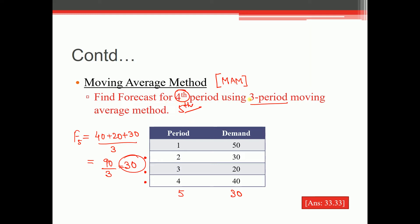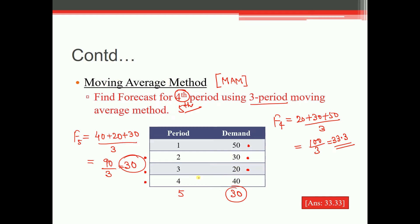Now suppose you need the forecast for the fourth period using three-period moving average. For the fourth period, the latest three data points shift accordingly. So F4 = 20 + 30 + 50, divided by 3 = 100 / 3 = 33.3. It's called the moving average because the data window moves. F5 = 30, F4 = 33.3.